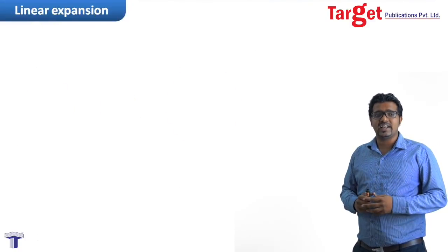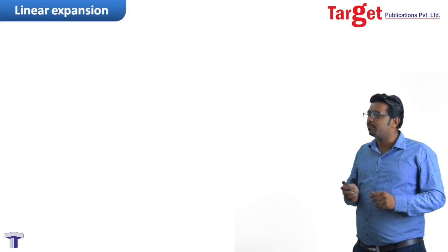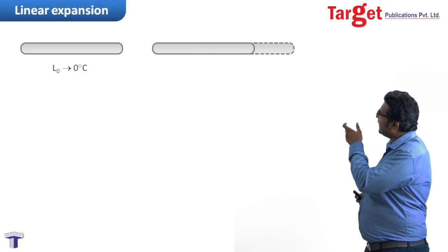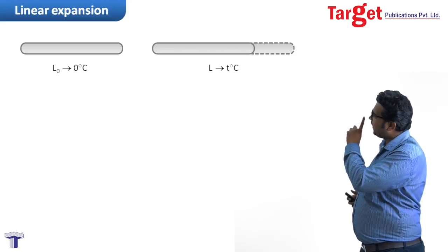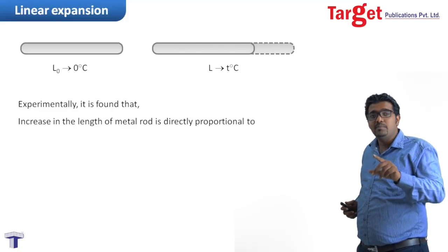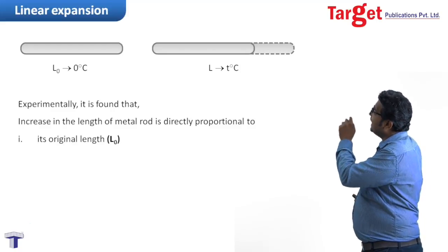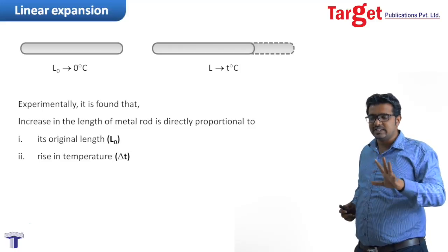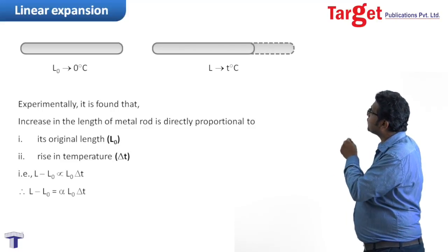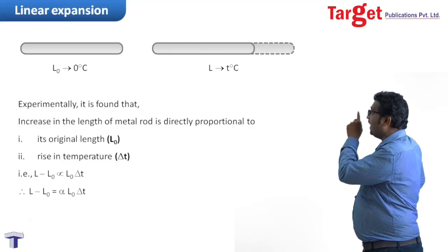Let's see what is Linear Expansion. When a matter rod is heated, it expands. Let us consider a matter rod with length L₀ at 0°C. When it is heated up to T°C, its length increases to L. So here, final length is L and initial length is L₀. Experimentally, it is said that increase in length, that is L minus L₀, is directly proportional to its original length L₀ and the increase in temperature, delta T.